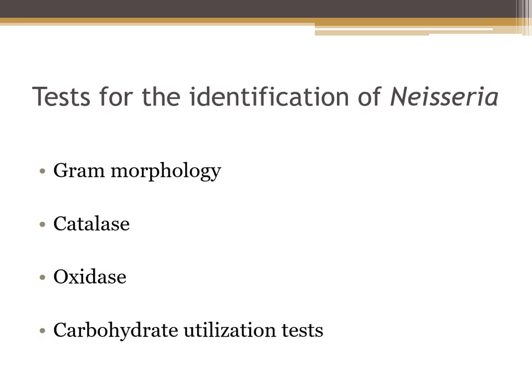To identify Neisseria to the species level, one of the first things we do is a gram stain, which will show gram-negative diplococci — kidney bean shaped cocci in pairs, taller than they are wide. They will be catalase positive and oxidase positive. For the carbohydrate utilization test, we determine whether organisms ferment maltose, lactose, sucrose, or dextrose.